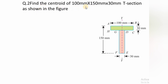Second problem: find the centroid of a 100 mm × 150 mm × 30 mm T-section. The breadth is 100 mm, depth is 150 mm, and thickness is 30 mm. Since the T-section has an axis of symmetry along YY, both sides are symmetrical about it, meaning the centroid lies somewhere on the YY axis. We only need to find the distance of the centroid from the horizontal reference axis — that is, we need to find only ȳ.